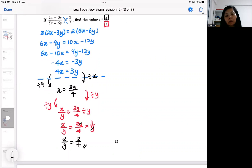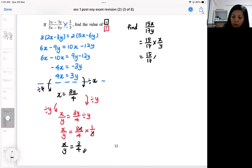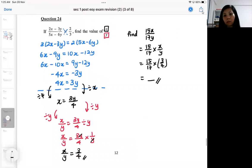So when you get a ratio like this, it's very flexible already. They can ask you to find, for example, 15X over 17Y. So that is just 15 over 17 times X over Y. So it will just be 15 over 17 times this ratio. So if you can find X over Y, essentially you can find any ratio.